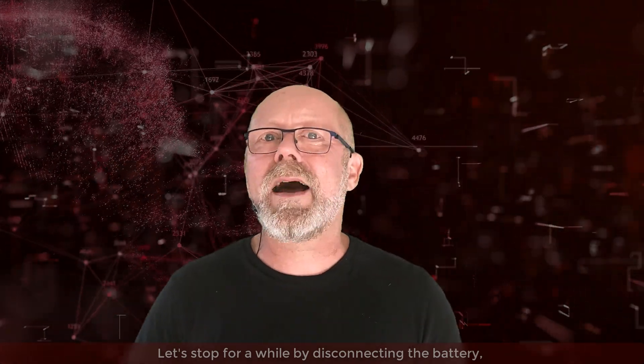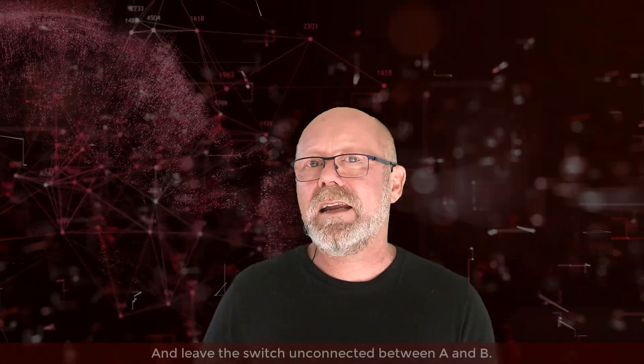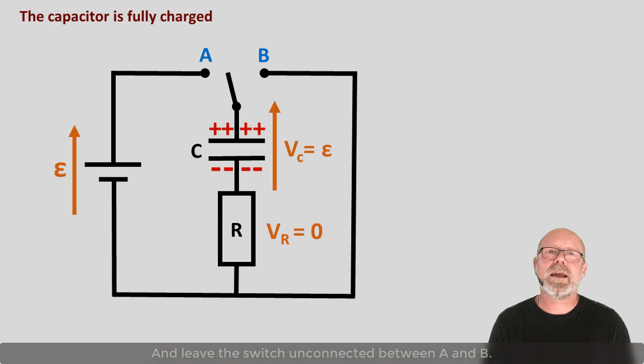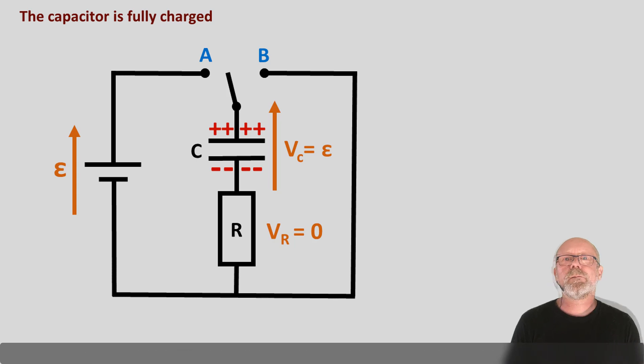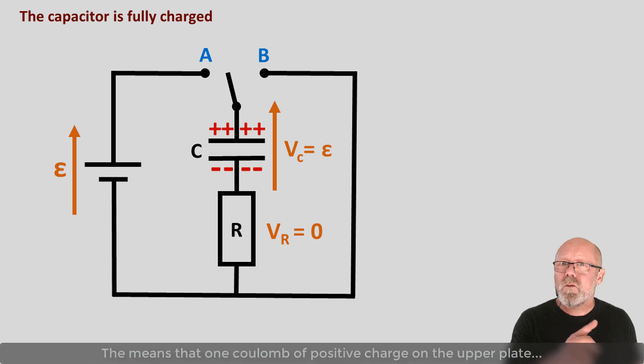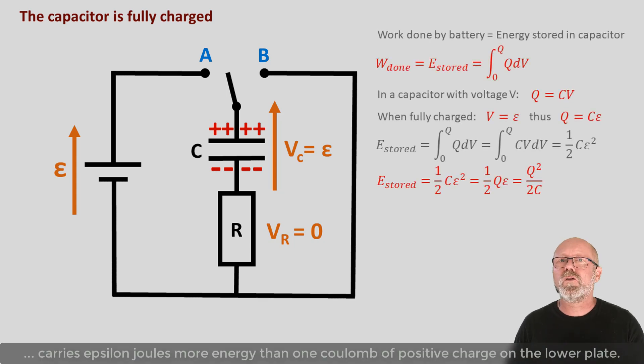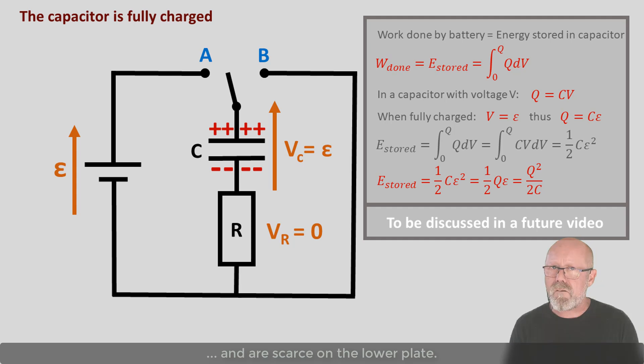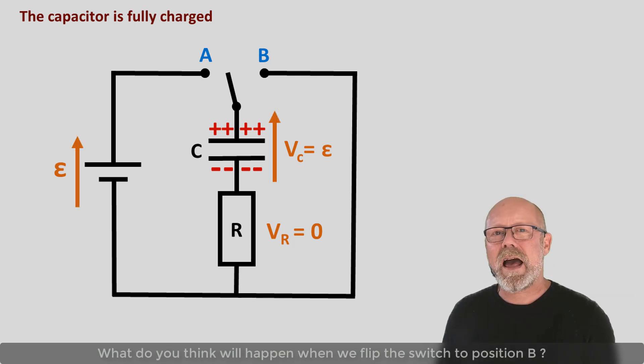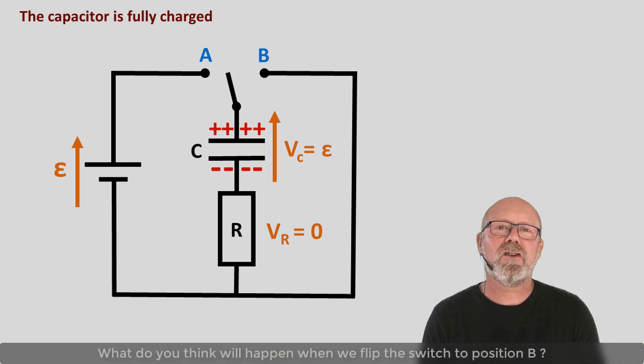Let's stop for a while by disconnecting the battery and leaving the switch unconnected between A and B. We have now a fully charged capacitor with a voltage across it of epsilon volts. That means that one Coulomb of positive charge on the upper plate carries epsilon joules more energy than one Coulomb of positive charge on the lower plate. This is because charges are densely packed on the upper plate and are scarce on the lower plate.